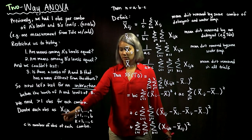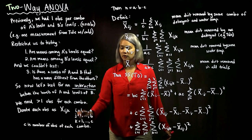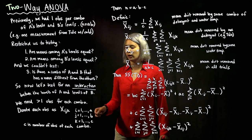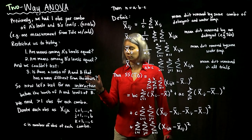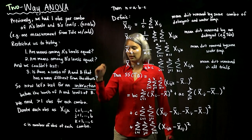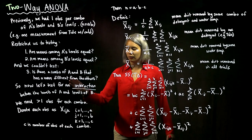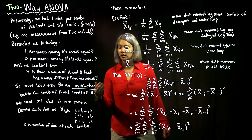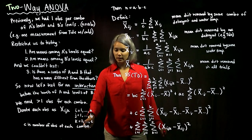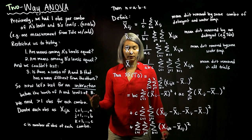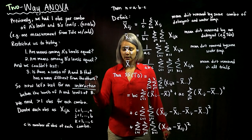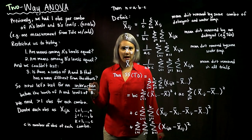Each observation is going to be called X_ijk. So i is for the level of A, j is for the level of B, and k is for which iteration we've done. So if we're on the second trial for this combination of A and B, then k is going to be equal to two. If we're having C different observations for each combination, then k goes from one to C. I goes from one to A, j goes from one to B, and k tells us which number experiment we are on for that exact combination of A and B.